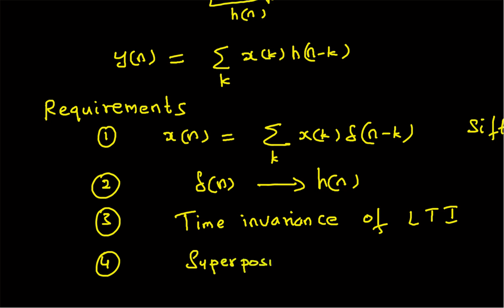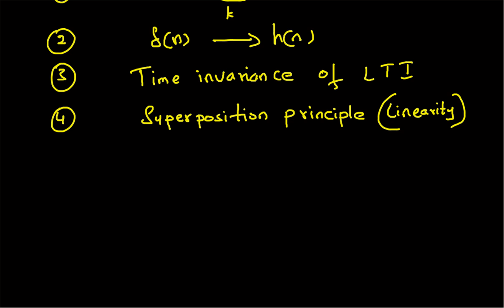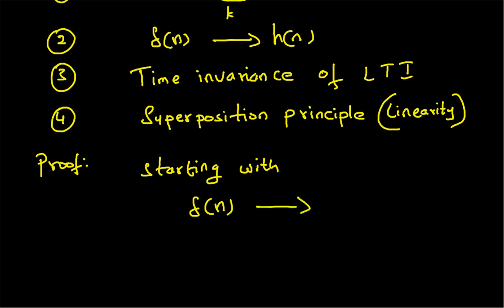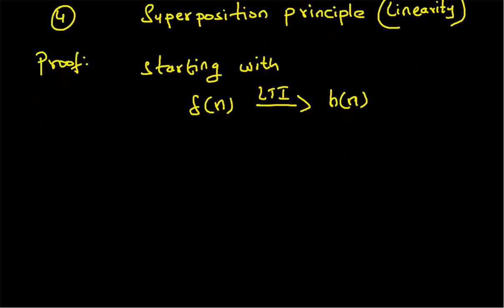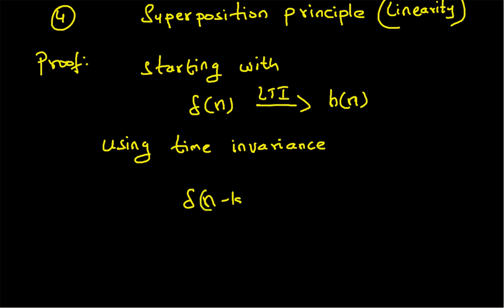Now let us start the proof with the definition of the impulse response. When we send delta(n), a unit sample, through the LTI system, we get h(n). Then using the time invariance property: when we send delta(n minus k), a shifted version of the impulse, through the LTI system, we get a shifted version of the output, h(n minus k).